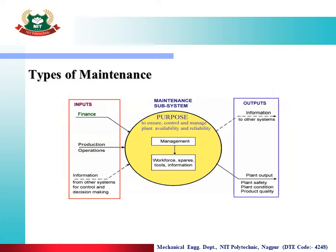Why do we need maintenance? In any source or any industry — whether it is a production industry or a power generation industry — we take input and convert it to output. For a power plant, the input includes finance, operations, information, systems, and resources such as water, coal, and setup costs. This input, through a process, is converted to output — energy conversion in the form of electrical energy. The machine operations are performed, mechanical energy is converted to electrical energy, and that is the output. In between this process, we need to perform maintenance.